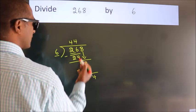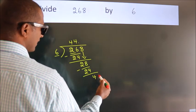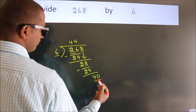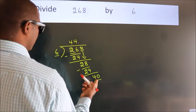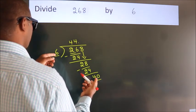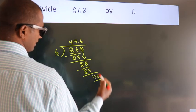So what we do is we put a dot, take zero, so 40. A number close to 40 in the six table is six sixes, 36.